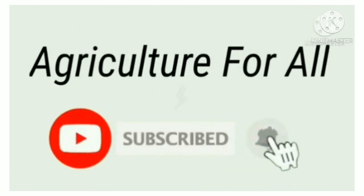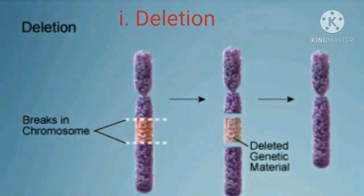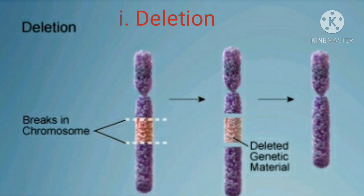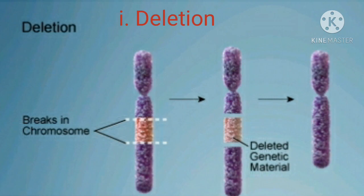Here in this figure, due to breakage, a piece of a chromosome is lost, and the genetic material is deleted. This type of mutation is known as a chromosomal deletion mutation.